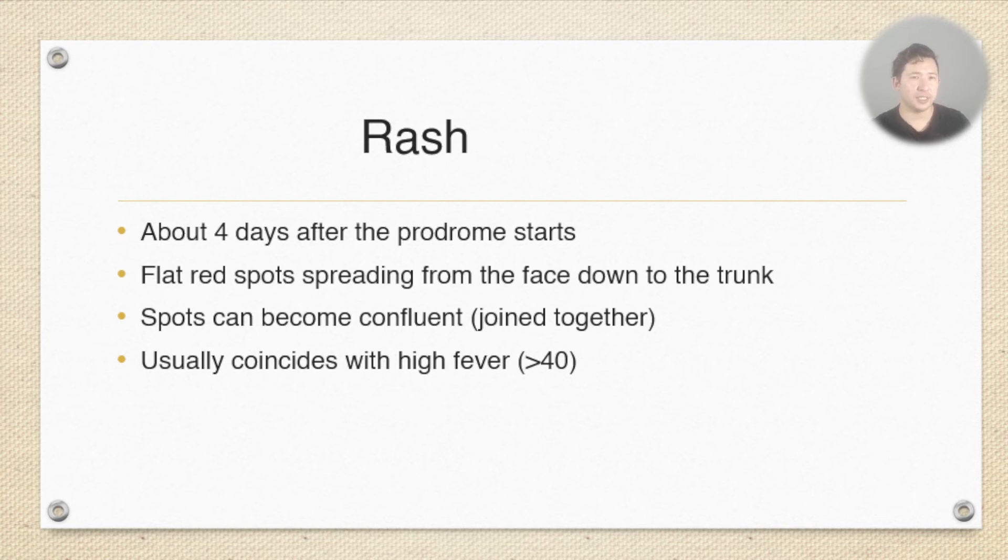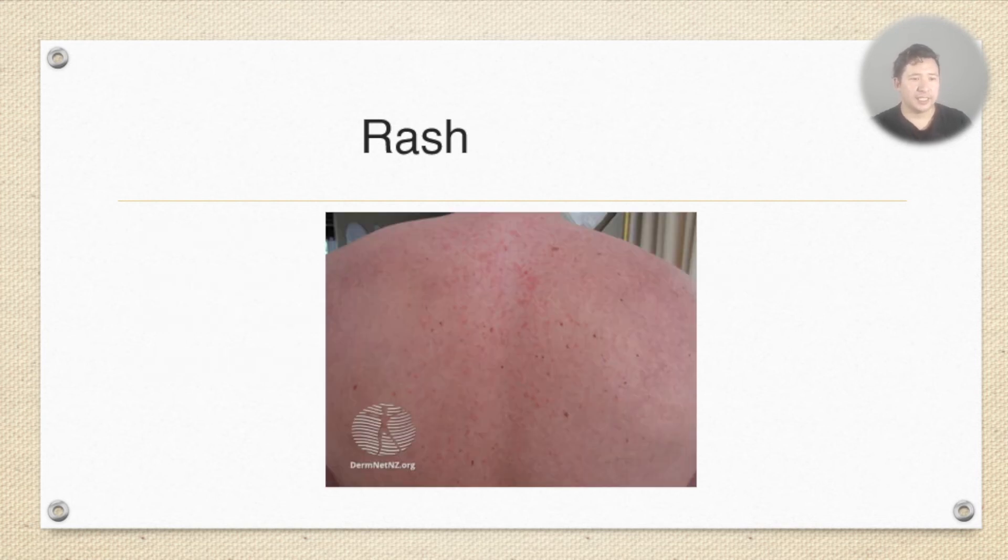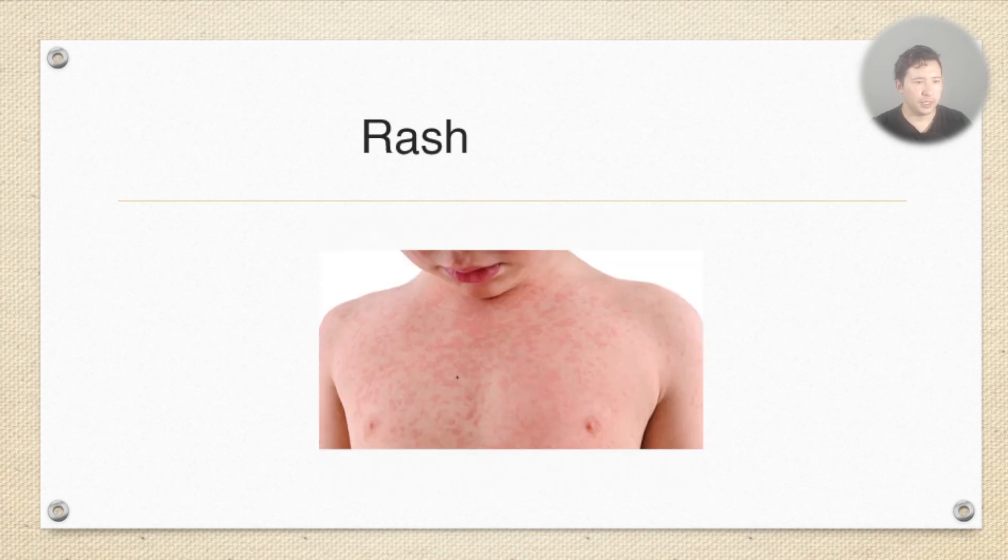This is the typical picture of the rash. It's called a morbilliform rash. You can see this widespread flat red spots across the patient's back and this would be usually a blanching rash. This is one of the typical exanthems, the rash associated with measles.